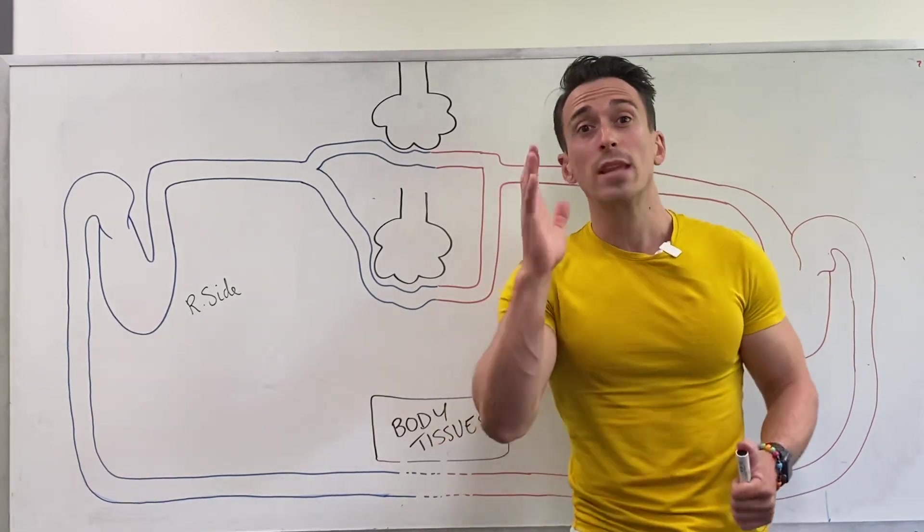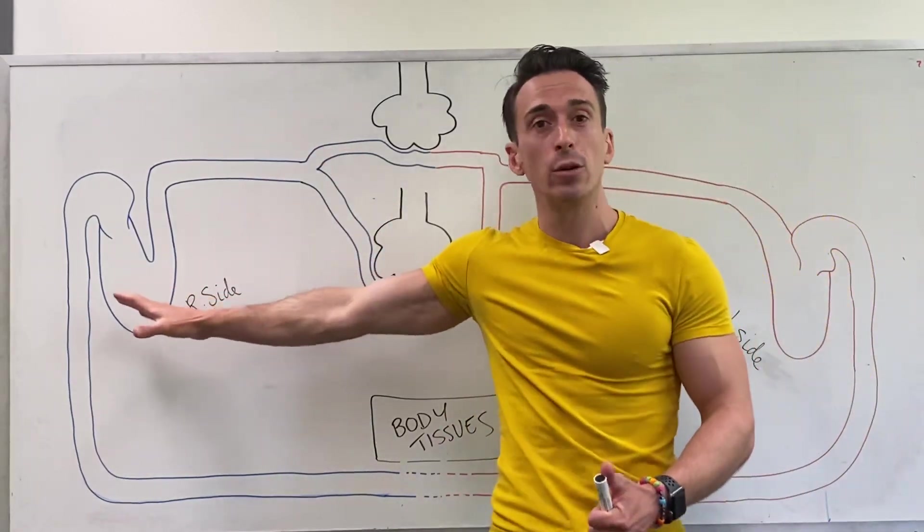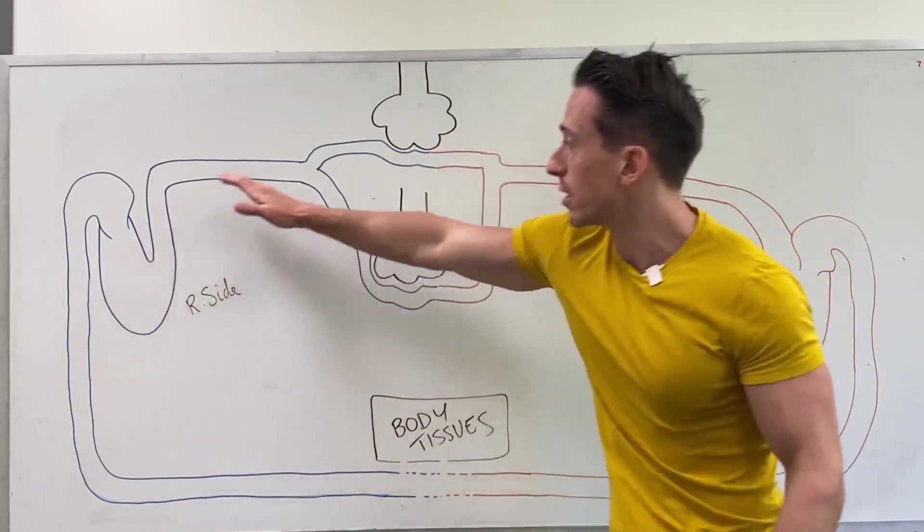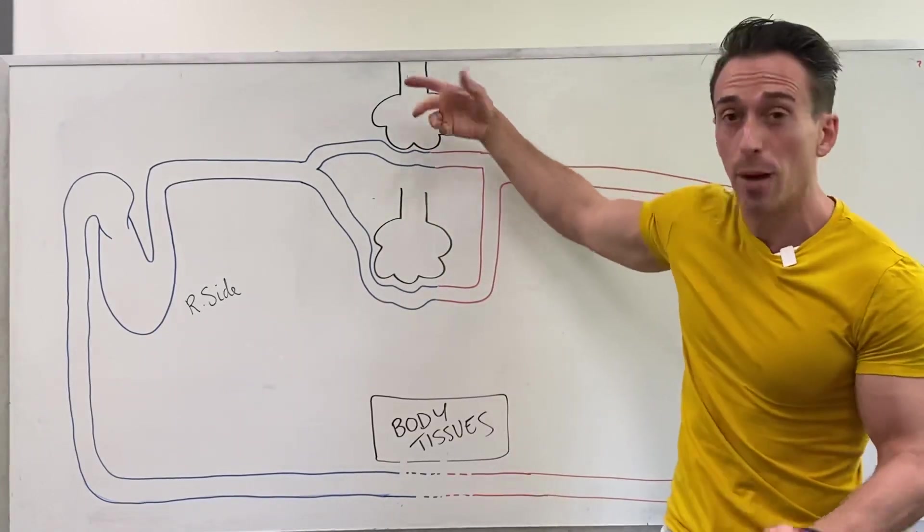We should begin this discussion by talking about the fact that the right hand side of the heart deals predominantly with deoxygenated blood. This deoxygenated blood needs to go to the lungs to receive oxygen and to drop off carbon dioxide.